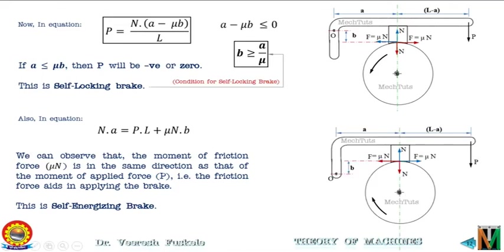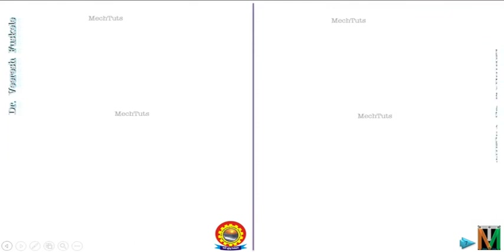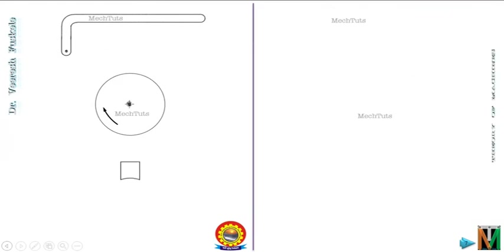In today's lecture we will discuss the third configuration of the single block brake, in which the fulcrum point lies below the line of action of the friction force. We will first examine the clockwise rotation in this configuration, then the anticlockwise rotation case, and further find out the conditions for self-locking and self-energizing brake.